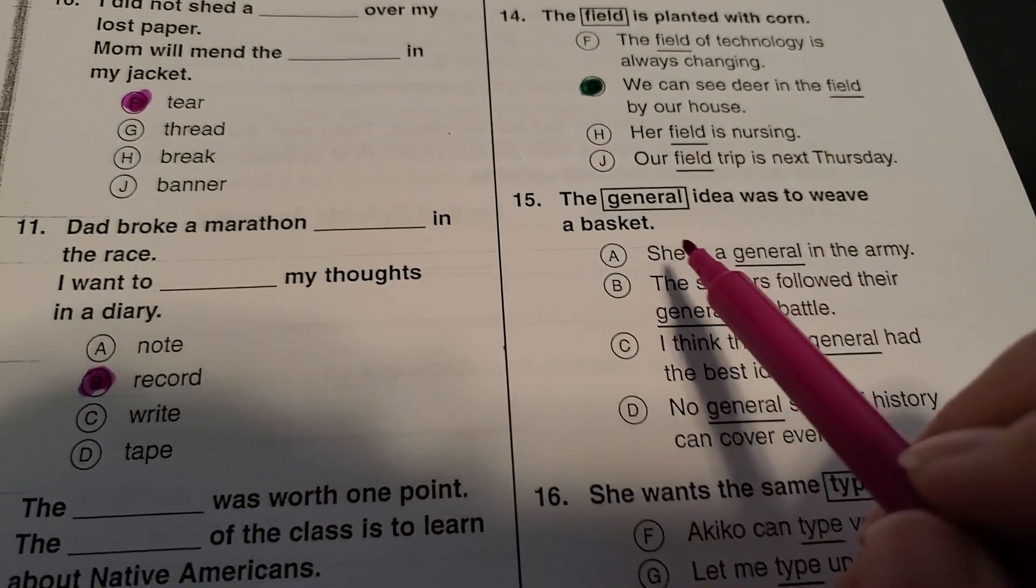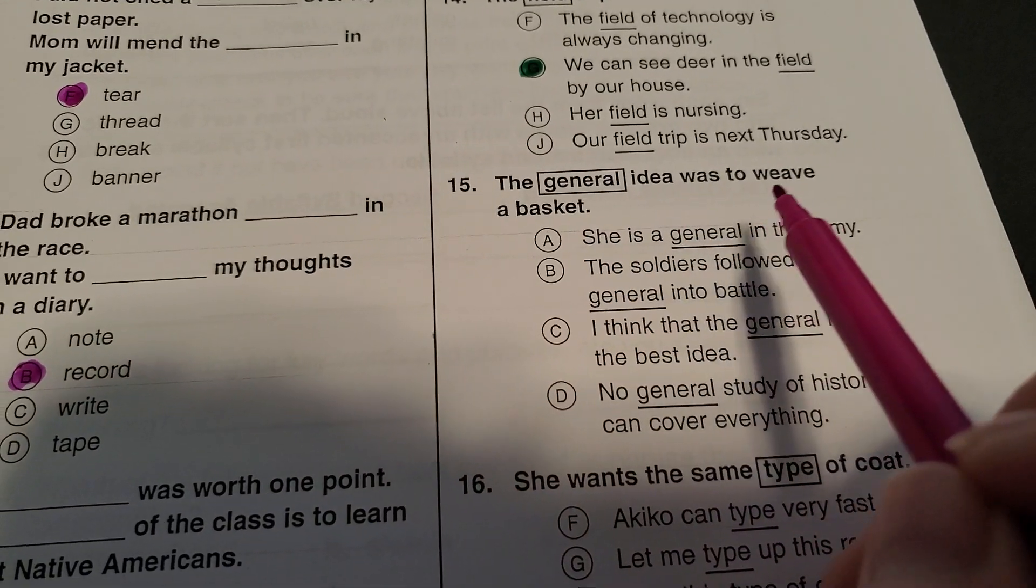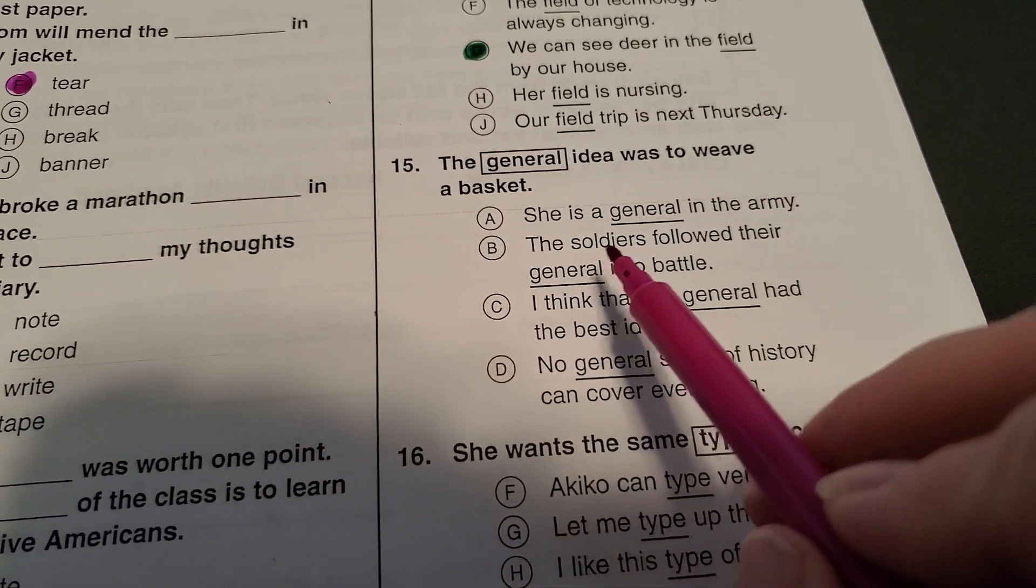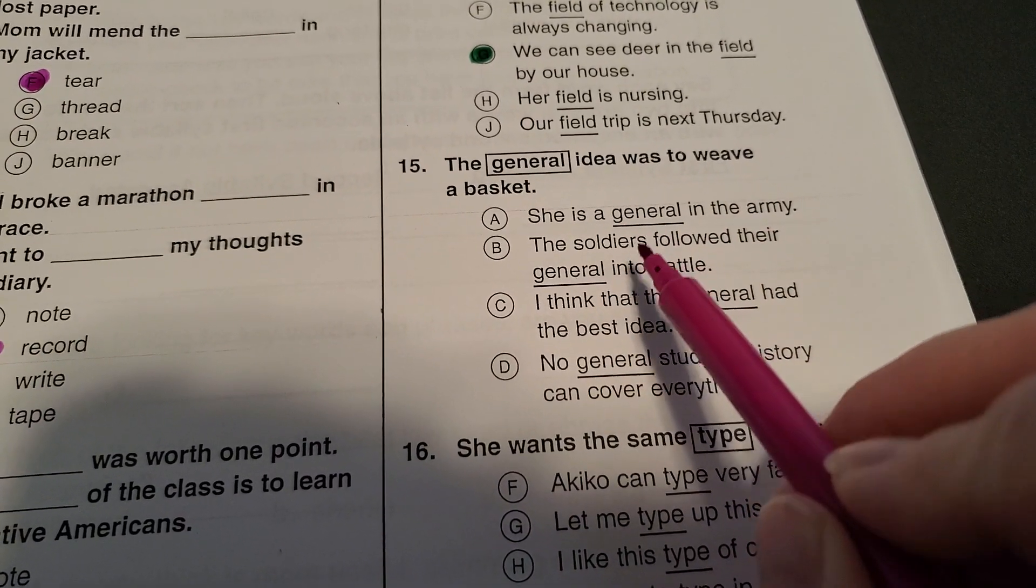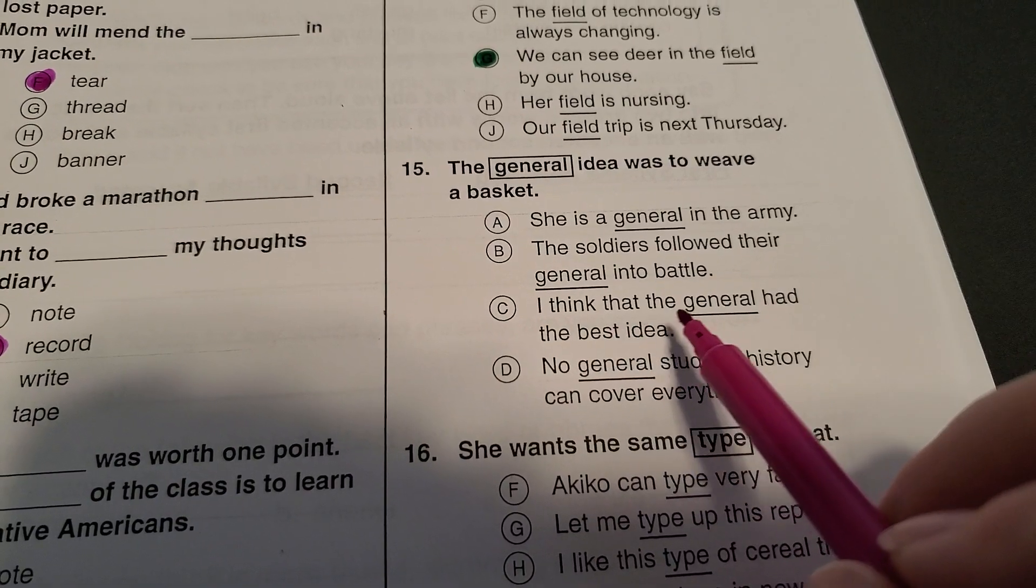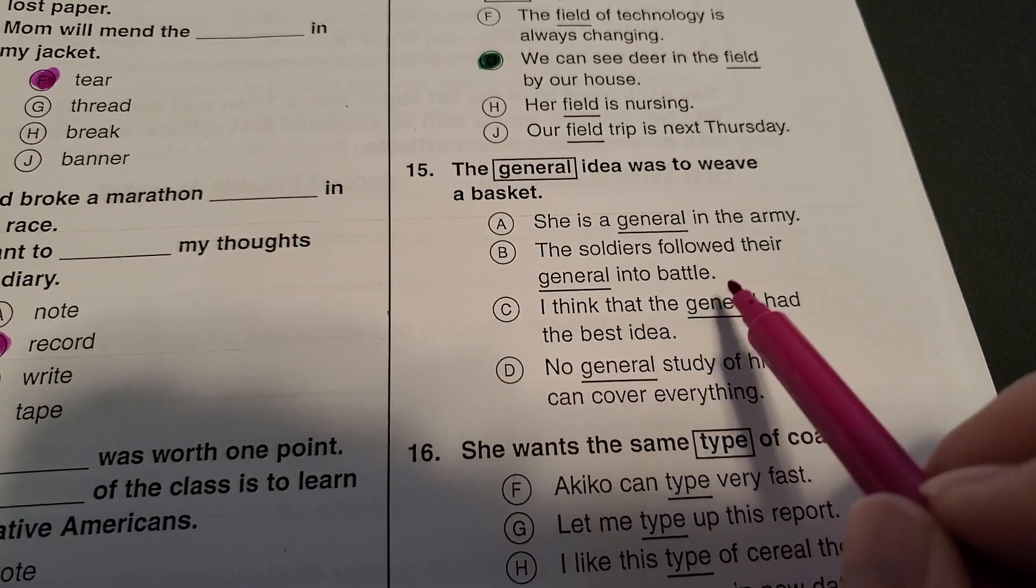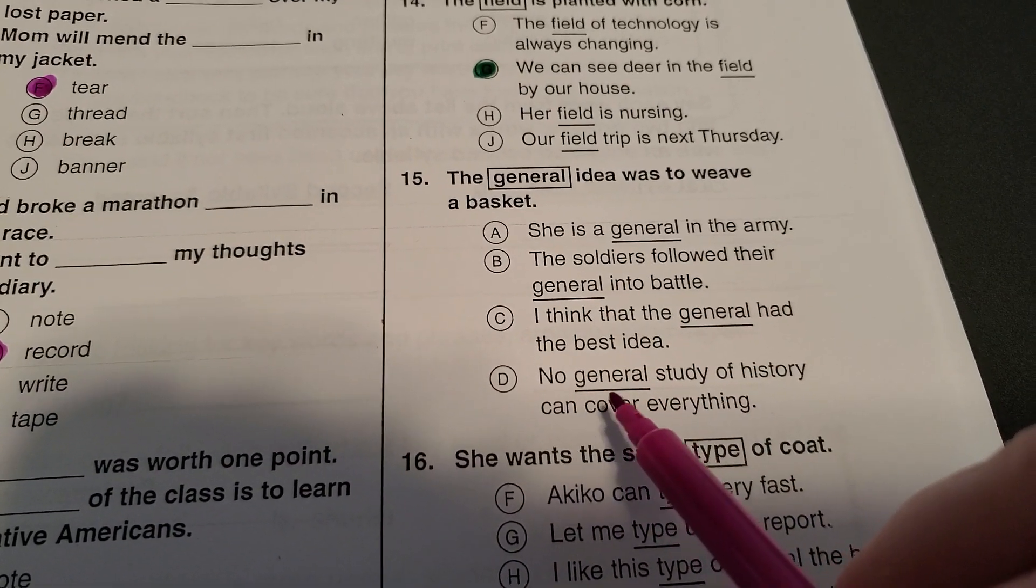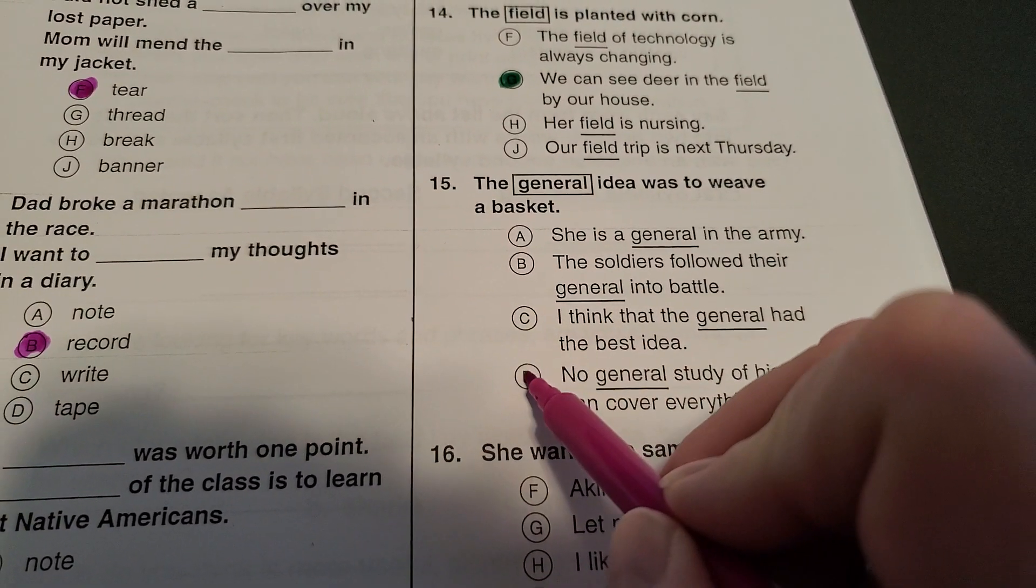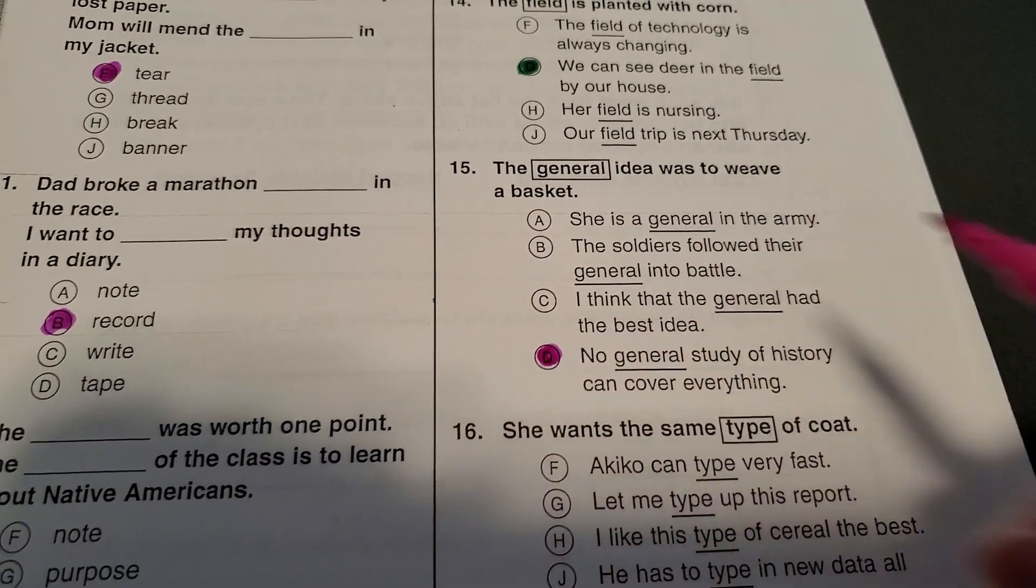Over here, general. The general idea was to weave a basket. So general means kind of the overall. She was a general in the army. Nope, that's a person. The soldier followed their general. Nope, that's a person. I think that the general had the best idea. That's still a person. No general study of history can cover everything. This would be the overall, so this would be the same. So hopefully you guys got D.